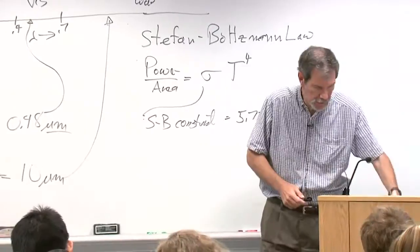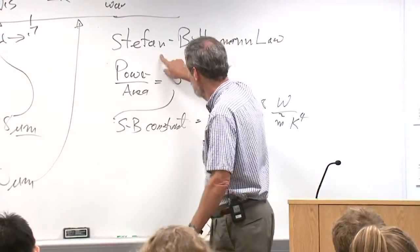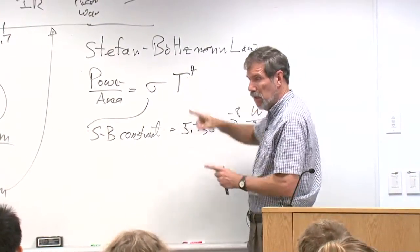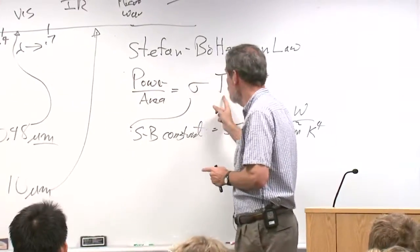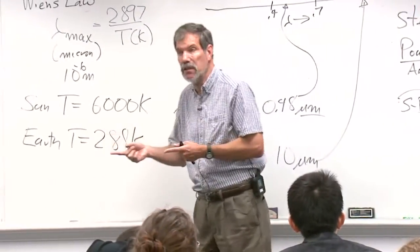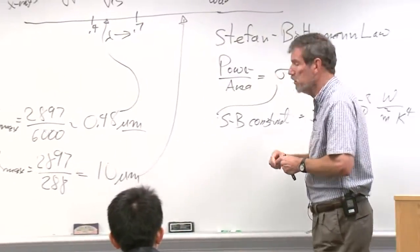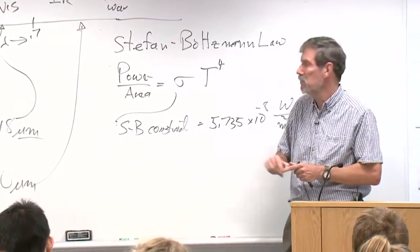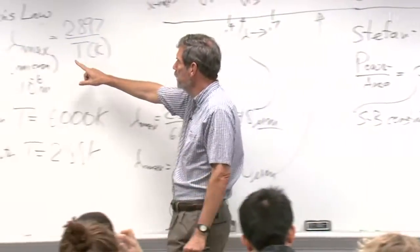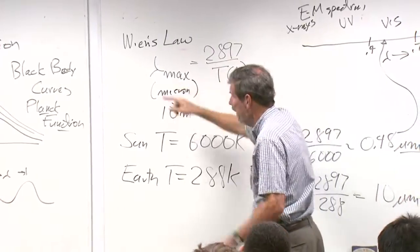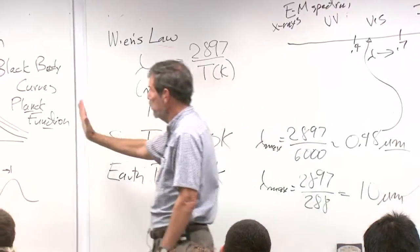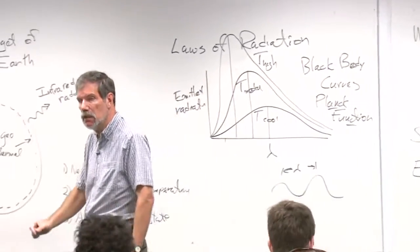Now before we go any further, let's see if these two laws make sense. The Stefan-Boltzmann Law says total power goes like the fourth power of temperature. If I were to double the temperature, the power would go up by a factor of not 2, not 4, not 8, but 16. So you'd increase the power by a factor of 16 by doubling the temperature — very powerful sensitivity to temperature. And Wien's Law says the wavelength of maximum radiation goes inversely with temperature: the higher the temperature, the shorter the wavelength being strongly emitted.